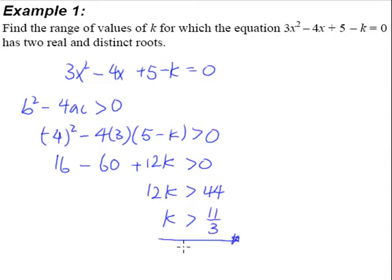So this will be the range of values of k for which the equation will have two real and distinct roots. Now what does it really mean? It means that as long as your k is greater than 11 over 3, well 11 over 3 is actually 3 and 2 thirds. What it means is that if your k is greater than 3 and 2 thirds...